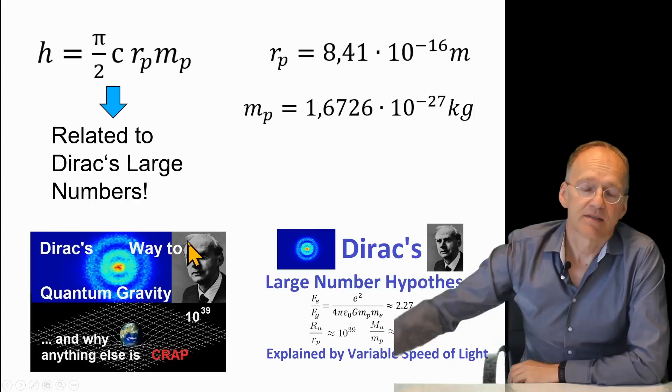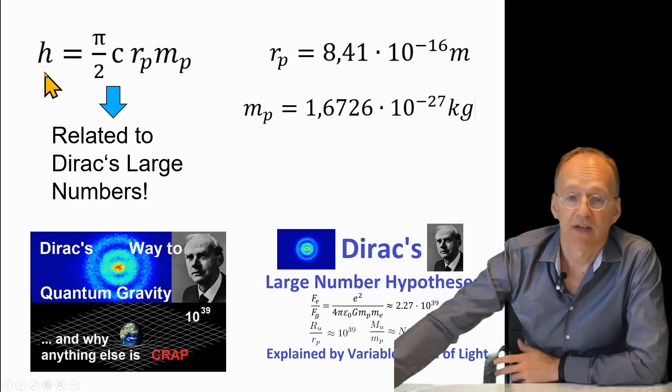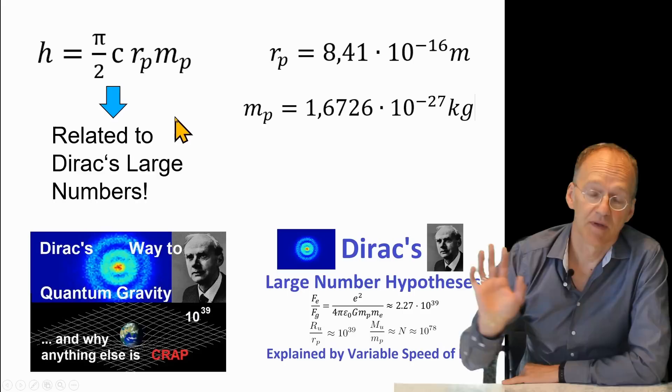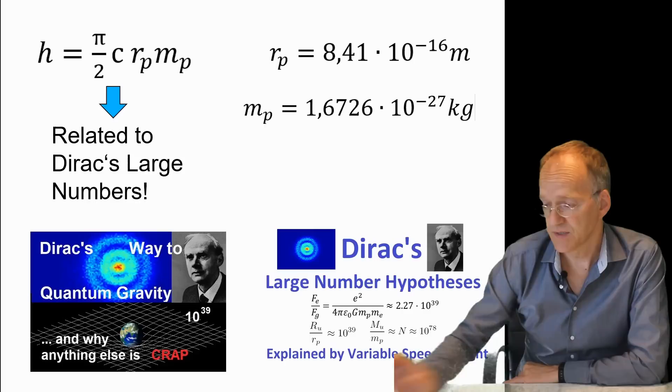We have the very interesting coincidence: Planck's constant is approximately π over 2 times c, the speed of light, times the radius of the proton, times the mass of the proton.